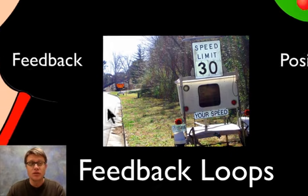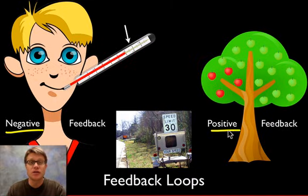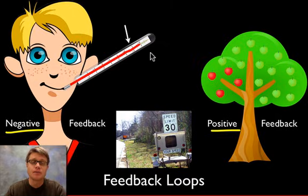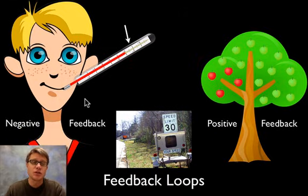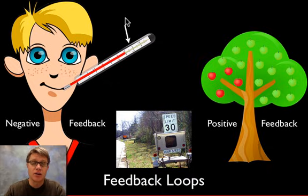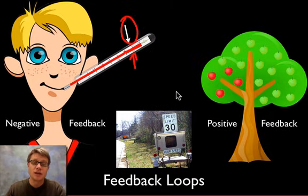Feedback loops essentially come in two different flavors: negative feedback loops and positive feedback loops. The most common is the negative feedback loop. For example, if my temperature increases, I'm going to start to sweat and vasodilate, which cools it down. Eventually my temperature goes down, and if it goes too far down I'm going to start to shiver, maybe get goosebumps, and vasoconstrict to hold body temperature close. That's a negative feedback loop — we dance back and forth around a set point.